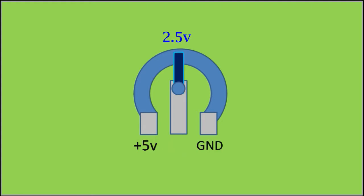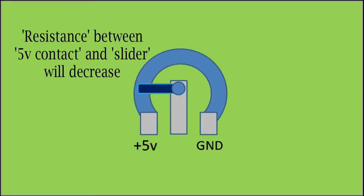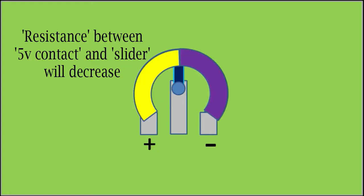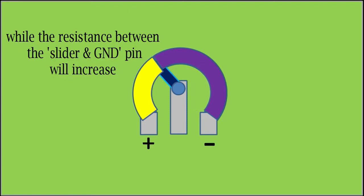If we move the slider towards 5V contact, the voltage will increase towards 5V. It is important to note that when this happens, the resistance between the 5V contact and the slider will decrease, while the resistance between the slider and the ground pin will increase.